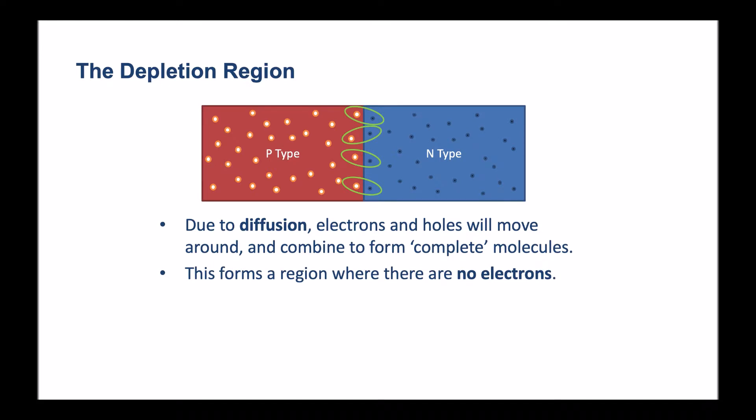This forms a region where there are no free electrons anymore. Any electrons that were free have been taken up by the holes or the deficit of electron to form a complete lattice structure. And so we end up with this region with no free electrons, and this is what we call the depletion region.